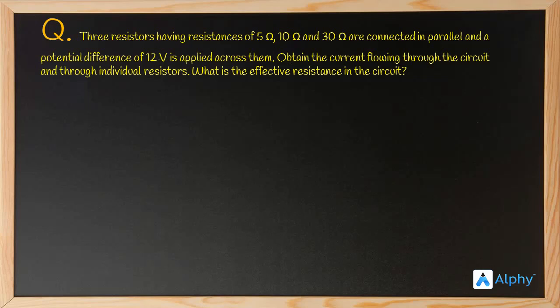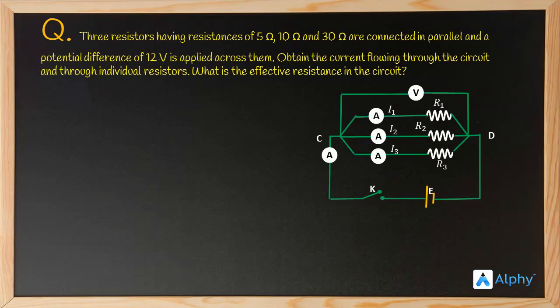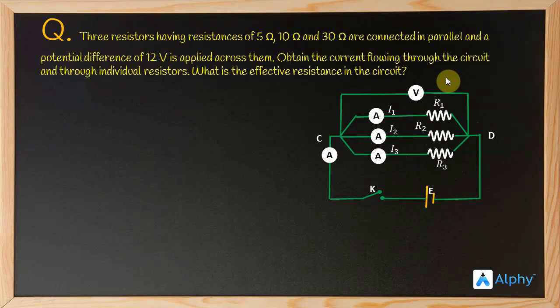The circuit diagram shows resistors R1, R2, and R3 connected in parallel, with individual currents I1, I2, and I3 respectively. An ammeter and a voltmeter are also shown. The given values are: R1 = 5 ohm, R2 = 10 ohm, R3 = 30 ohm, and total potential difference V = 12 volts.